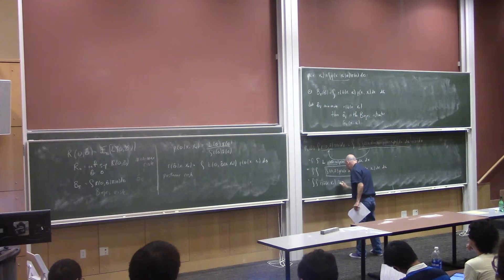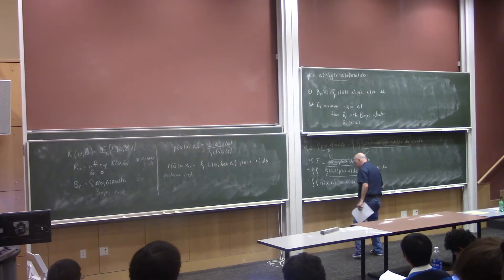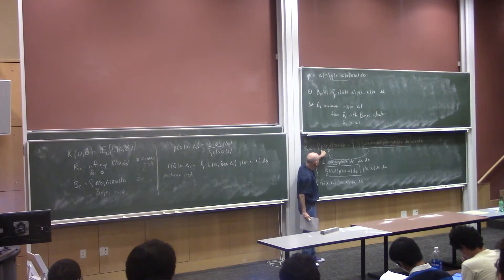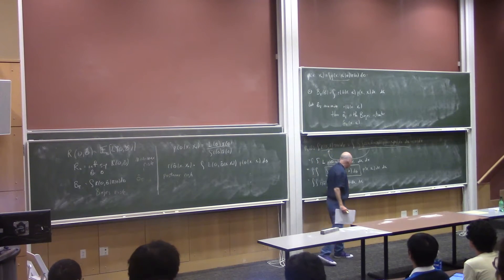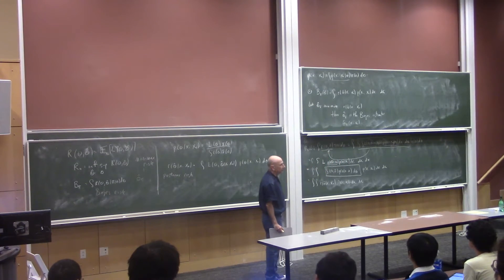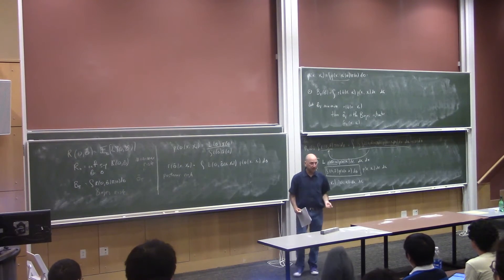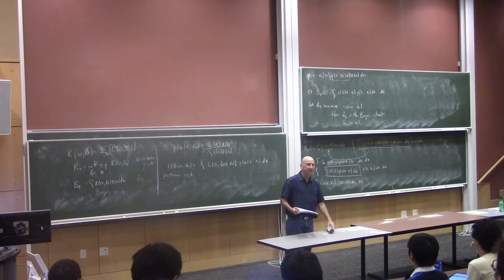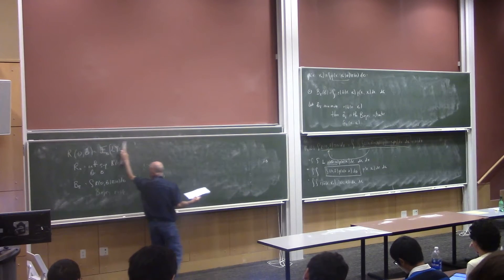So we can think of the Bayes risk as: take the usual risk function, multiply by the prior, and integrate — or take the posterior risk, multiply by the marginal distribution of x, and integrate. Either way. But now we see that to find the Bayes estimator, it is sufficient to minimize the posterior risk for each x. Let me now convince you that this is often easy to do, using the canonical example: L2 risk.